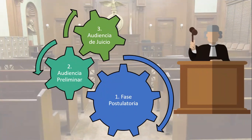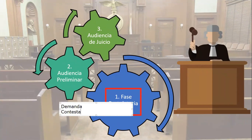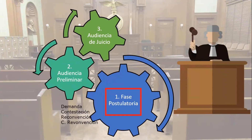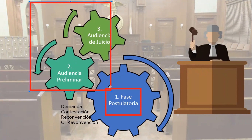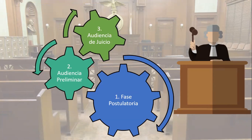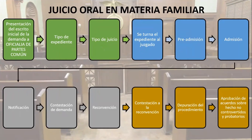Juicio oral en materia familiar. Las fases que ya conocemos: la fase postulatoria, que es una fase escrita — la demanda, la contestación, la reconvención y la contestación a la reconvención. Luego la audiencia preliminar. Todo esto es la fase de sustanciación del juicio, lo que ya revisamos con antelación, pero ahora en un conflicto de naturaleza familiar.